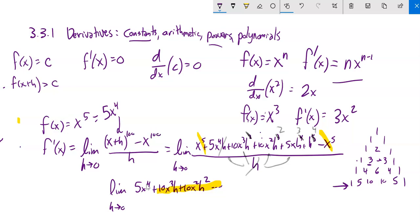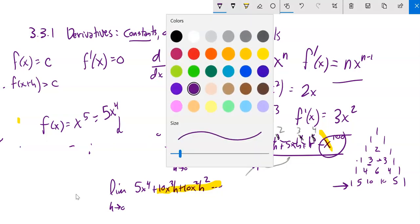Let's say this was to the 100th, right? This would be x to the 100th. This would be 100 x to the 99th h, and it would blah, blah, blah all the way down. And then the last term would be minus x to the 100th. This term's always going to cancel out with that. That first term's always only going to have one h in it. Everything else as h goes to 0 will drop out.